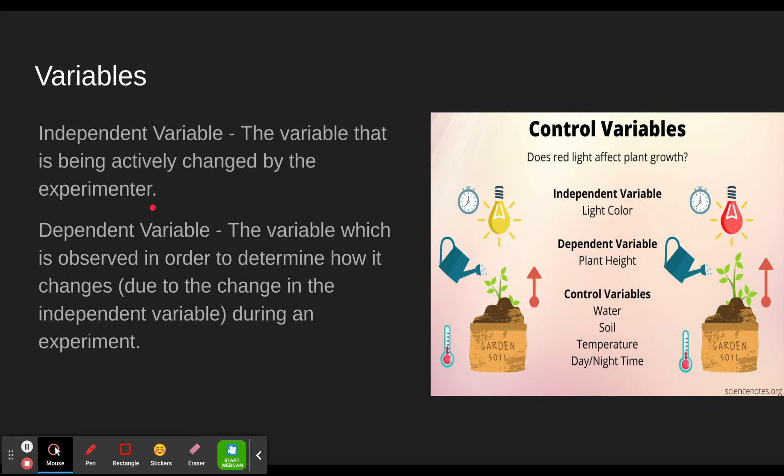So we change the salinity, the independent variable, and we watch how does the buoyancy change. Or in the example over here to the right, the independent variable is the light color. We have a yellow light here. We have a red light here. We want to figure out how the plant height changes. So two weeks later or whatever, how tall is this one? How tall is this one? Was the red light more effective than the yellow light? If you want to make that a variable, you could talk about the frequency of the light. Each color has a frequency, so you could just change the frequency and make it very numerical.